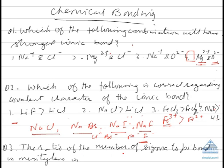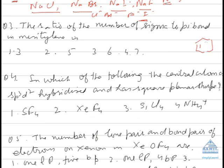Now look at the question: the ratio of the number of sigma to pi bonds in mesitylene. First, form the structure of mesitylene — this is 1,3,5-trimethylbenzene. Please mark each bond carefully; indicate hydrogen atoms explicitly to avoid errors. Now count the number of sigma bonds: one, two, three, four, five, six, seven, eight, nine, ten, eleven... twenty-one sigma bonds total. Pi bonds are three. So the ratio of sigma to pi bonds comes out to be seven.